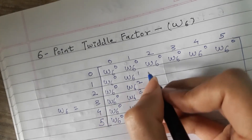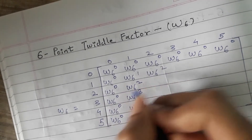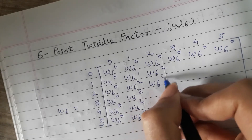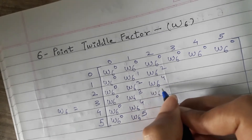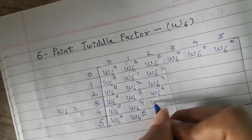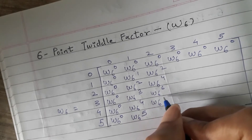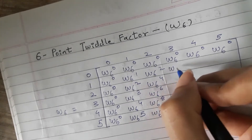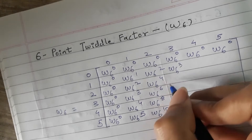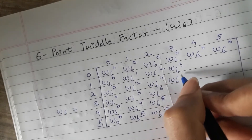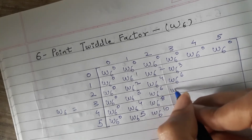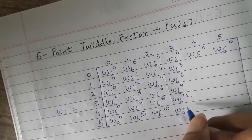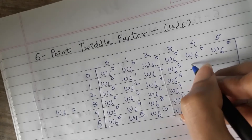Likewise, for the next row: 1 into 2 gives W6 raised to 2, then W6 raised to 4, continuing through the remaining entries of the matrix.